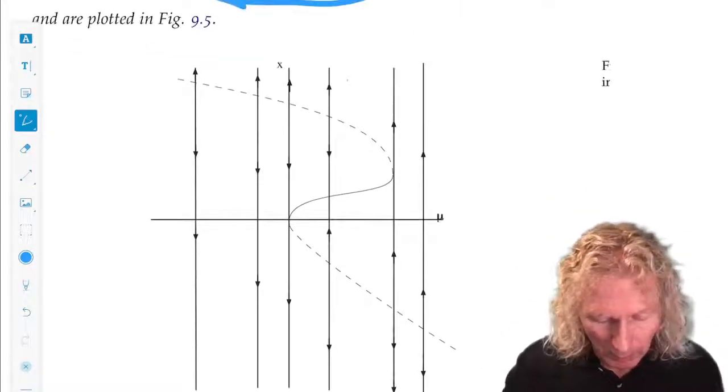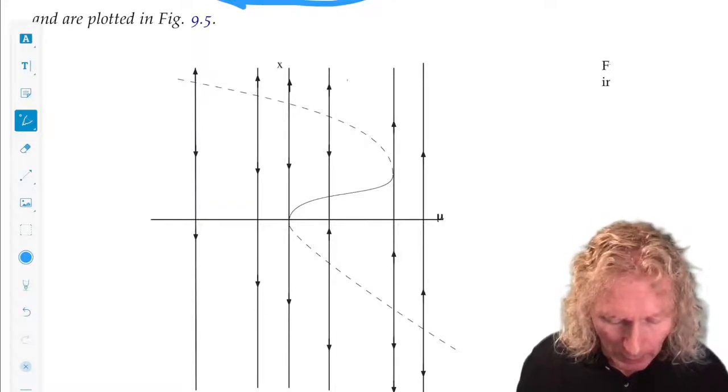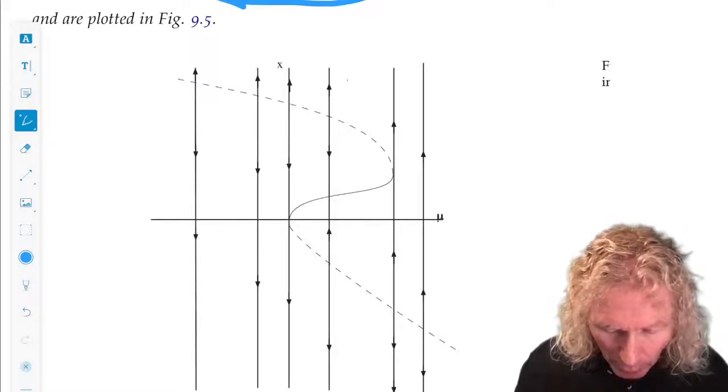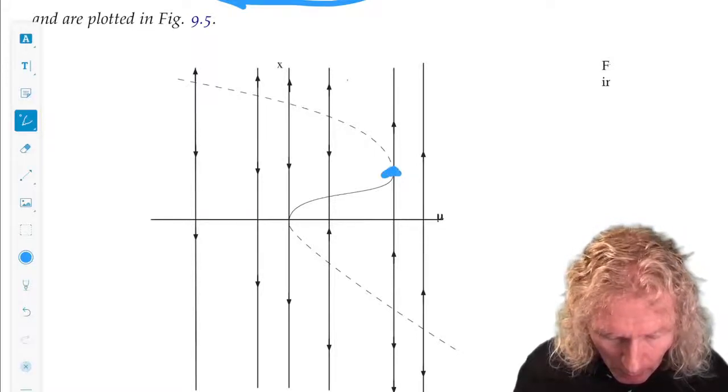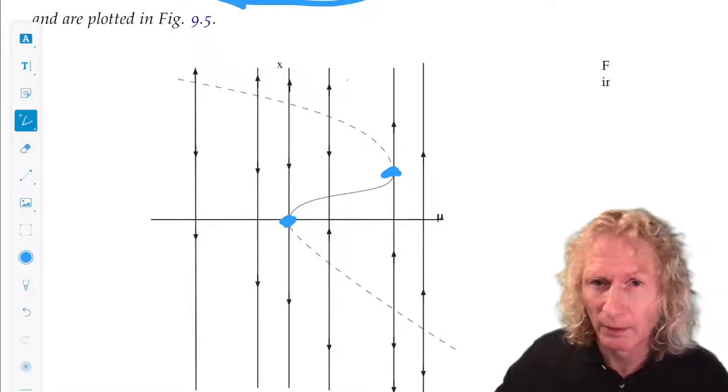You can easily check the linearized stability. There are two saddle node bifurcation points in the same family.